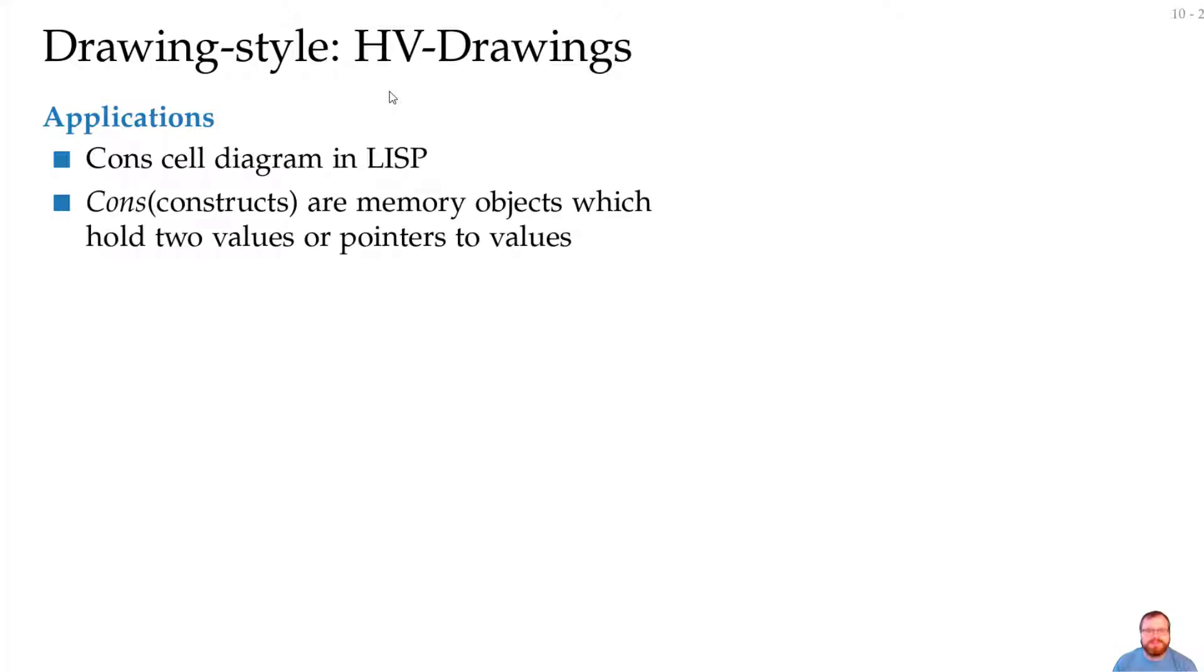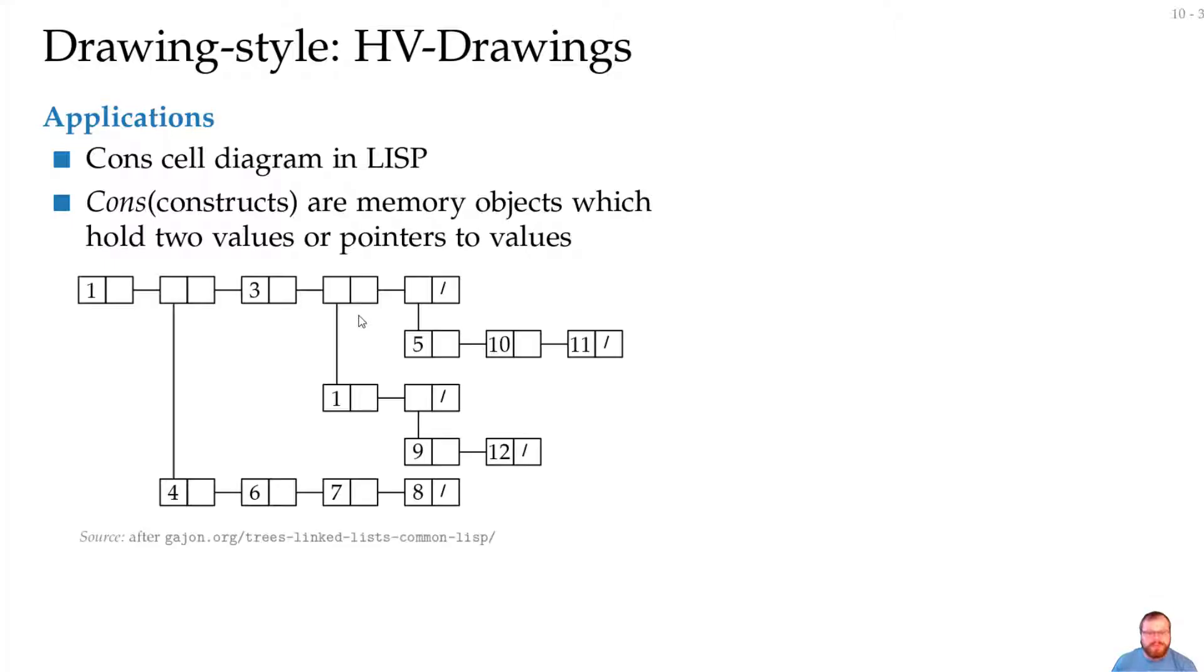This is basically a visualization of Lisp programs. Cons constructs are memory objects which can hold two values or pointers to values. For example, this one here. We have one memory object here. The first one is a value and the second one is a pointer. It goes to the right. This memory object here has two pointers. We put the first one downwards and the second one to the right.